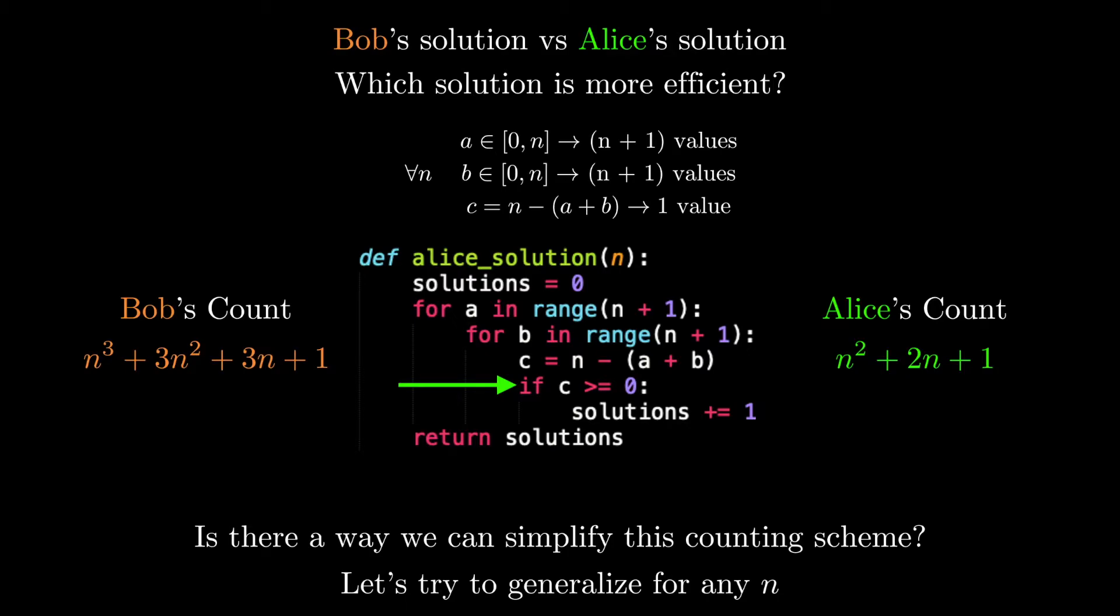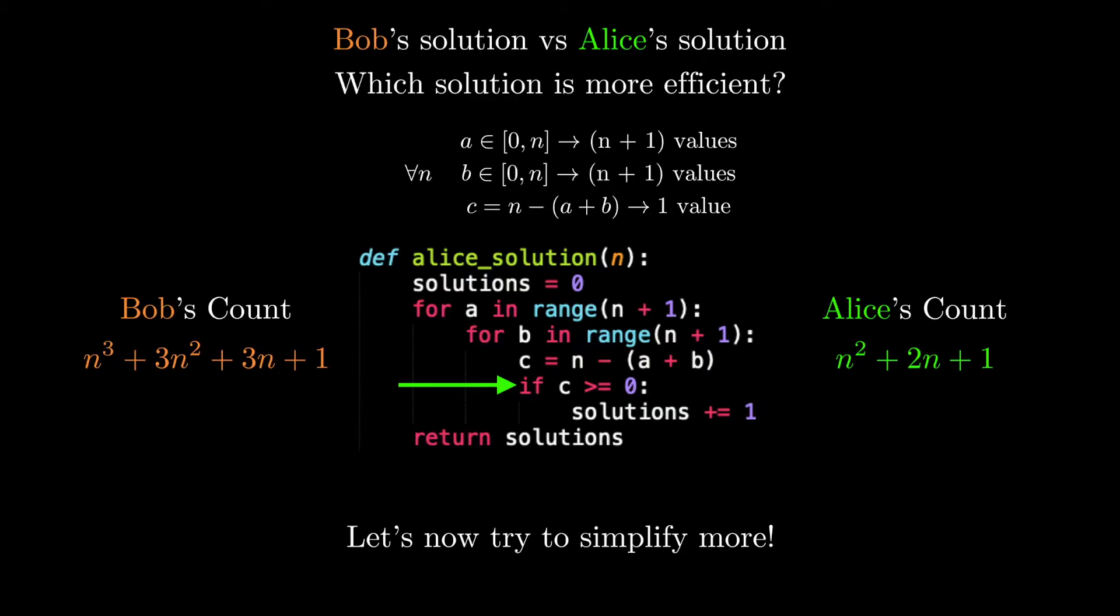So now we have a general expression for how each algorithm operates for any n value. Great. But can we simplify more? Well, if what we care about is how the program performs as the input grows, what really matters in the long run is the worst case performance when n is very large. When n is very large, the lower order terms become so relatively small when compared with the higher order terms that we can essentially ignore them. Even though we lose some technical accuracy, we will take the added simplicity.